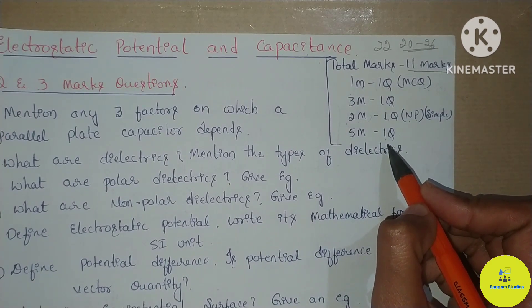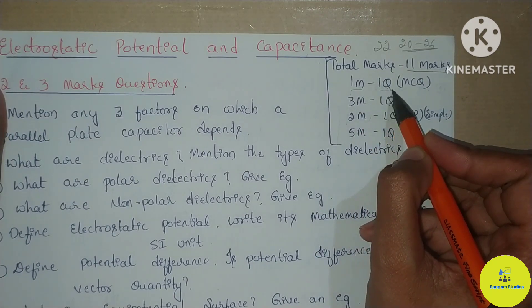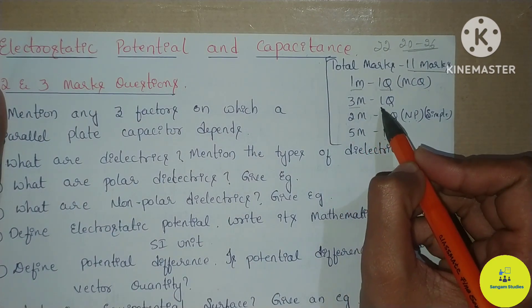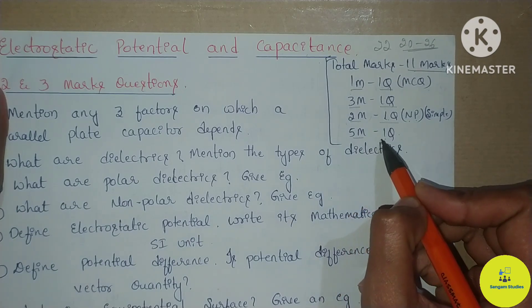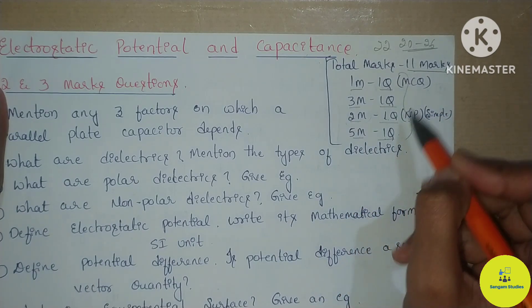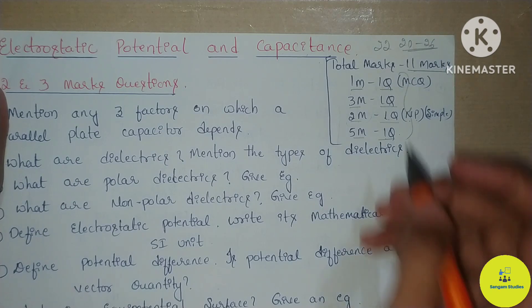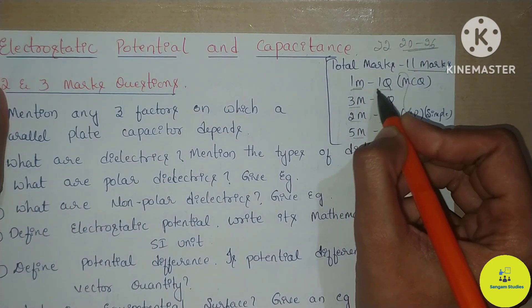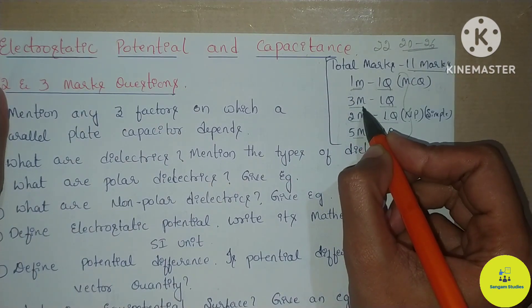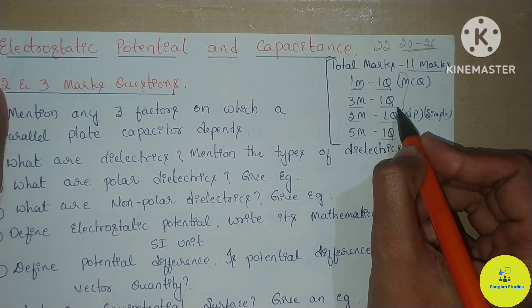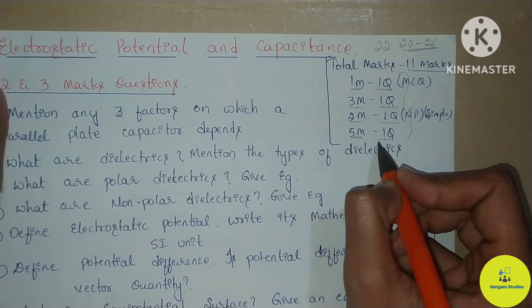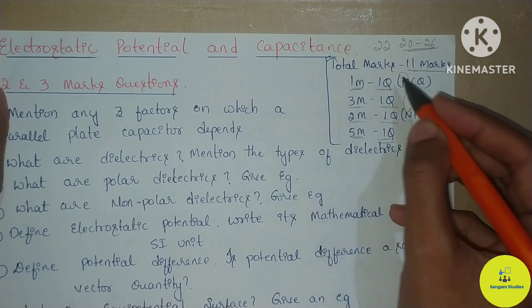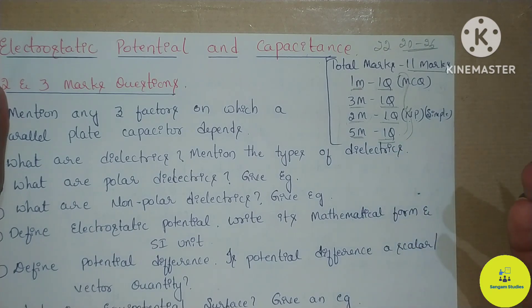Here is the final examination question paper pattern: 1-mark question — 1; 3-mark question — 1; 2-mark questions — 1; 5-mark question — 1. The questions are doubled, meaning for each mark type there are two questions given, and you choose one — so one more gives two questions, three marks gives two questions, two marks gives two questions, five marks gives two questions.